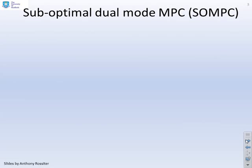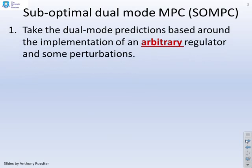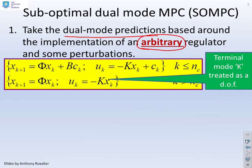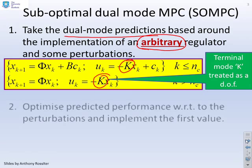Let's consider how we might define a suboptimal dual-mode approach. We're going to take the dual-mode predictions as being based around the implementation of an arbitrary regulator and some perturbations. So we've got the same structure as before, but the key thing now is that this k is not necessarily got a synergy with the underlying performance index. That k in the terminal mode can be treated like a degree of freedom, something you can choose.